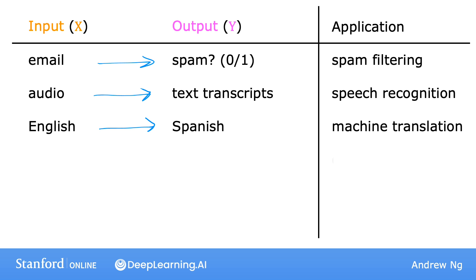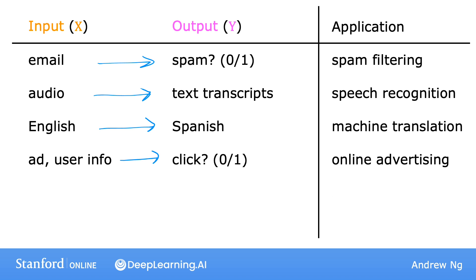The most lucrative form of supervised learning today is probably used in online advertising. Nearly all the large online ad platforms have a learning algorithm that inputs some information about an ad and some information about you, and then tries to figure out if you will click on that ad or not. By showing you ads you're slightly more likely to click on, every click is revenue — this drives a lot of revenue for these companies. Maybe not the most inspiring application, but it certainly has a significant economic impact.